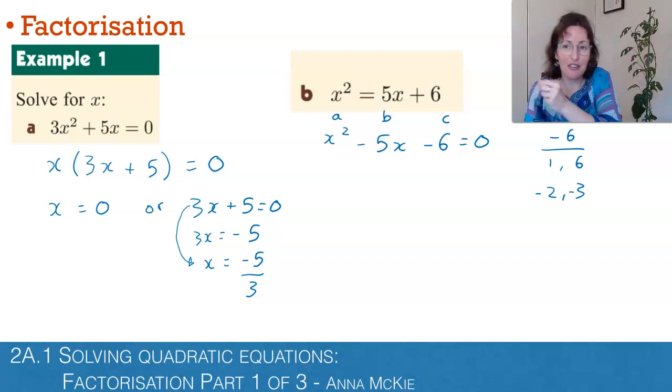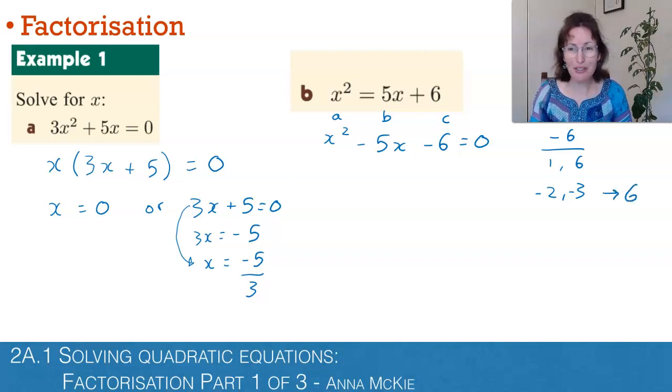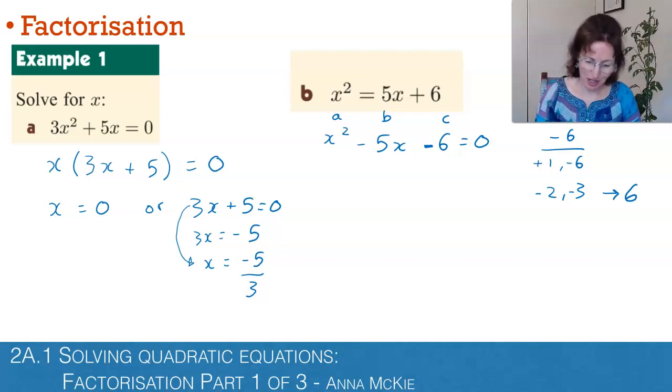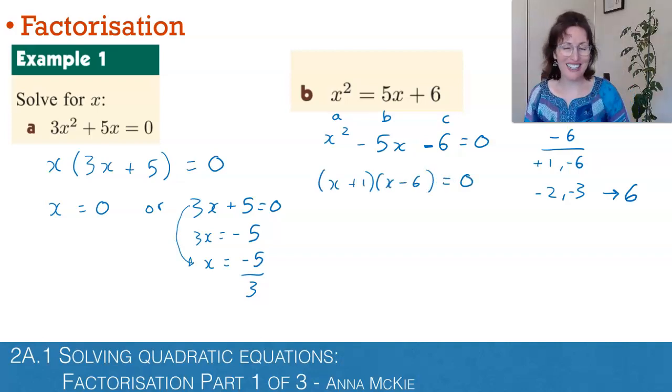To have it where it's negative 6 in this term, the constant term, that means only one of the factors can be negative. And that's why this first pair is going to work. To get negative 5, we would need to start with a positive 1 and subtract off 6. So there are pairs that we're going to write here.